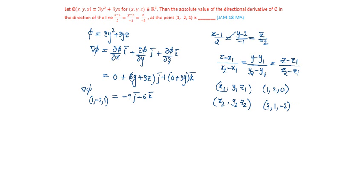So the vector passing through these points will be n bar, equal to (3-1)i bar plus (1-2)j bar plus (-2-0)k bar, which is 2i bar minus j bar minus 2k bar.